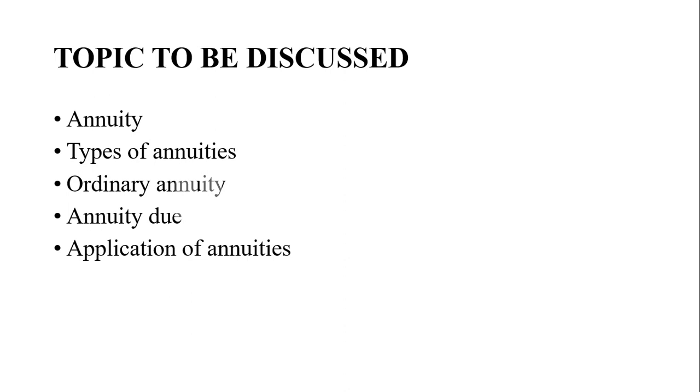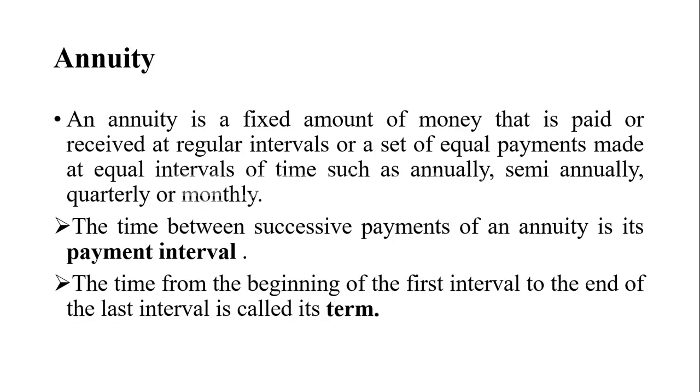Our first topic is annuity. Basically, annuity is a fixed amount of money that is paid or received at regular intervals, or a set of equal payments made at equal intervals of time such as annually, semi-annually, quarterly, or monthly.